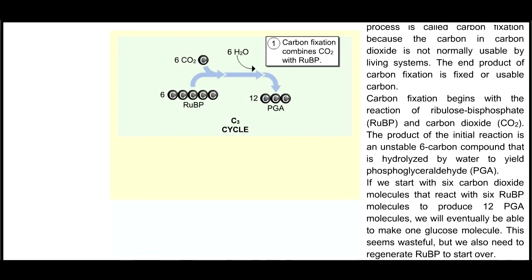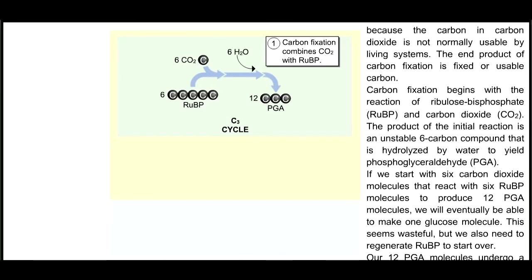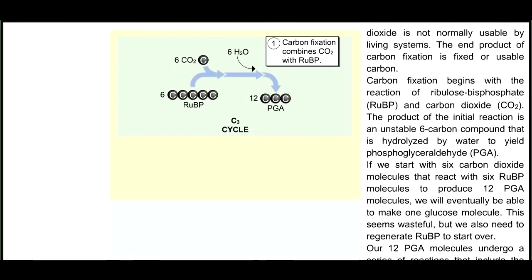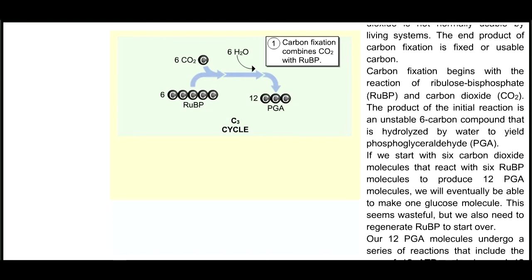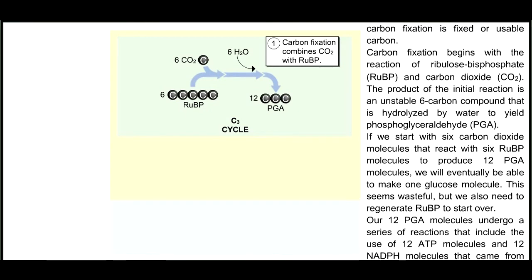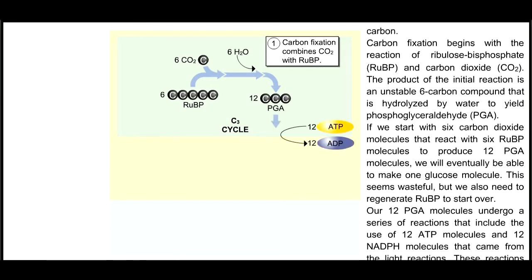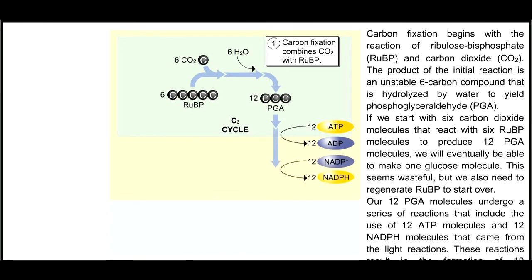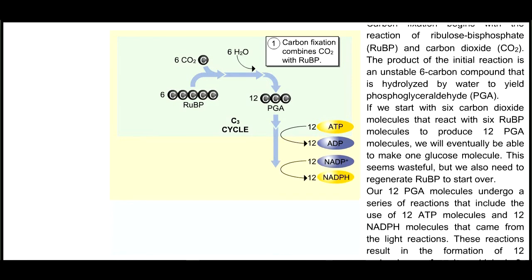This seems wasteful, but we also need to regenerate RuBP to start over. Our 12 PGA molecules undergo a series of reactions that include the use of 12 ATP molecules and 12 NADPH molecules that came from the light reactions.